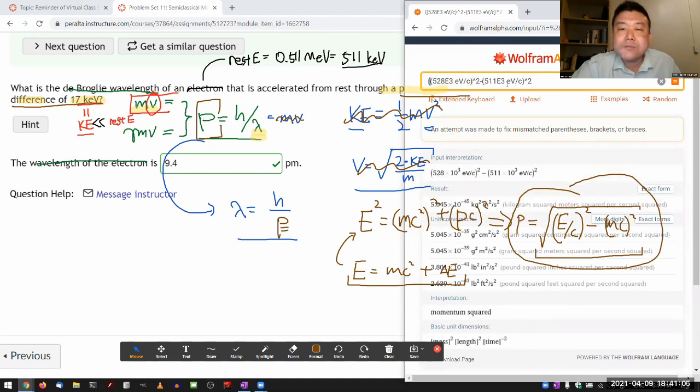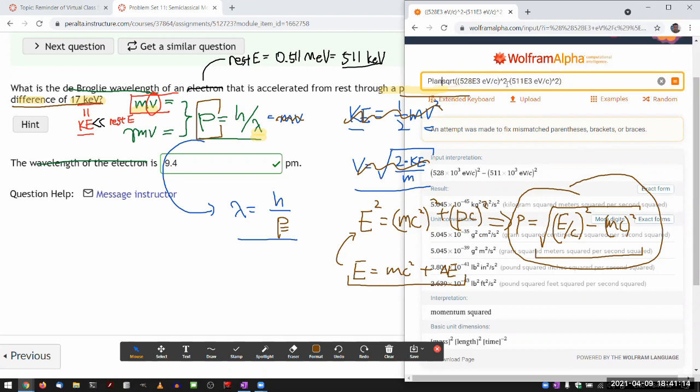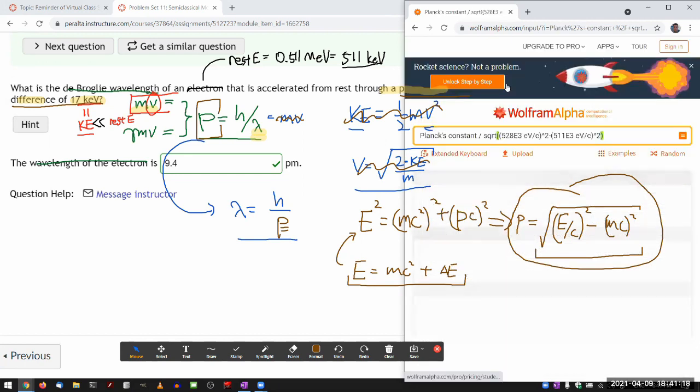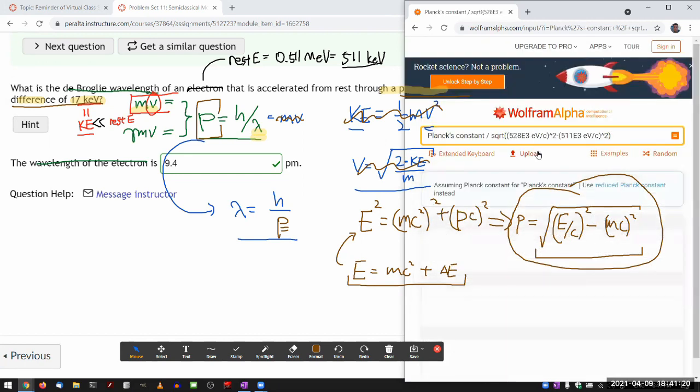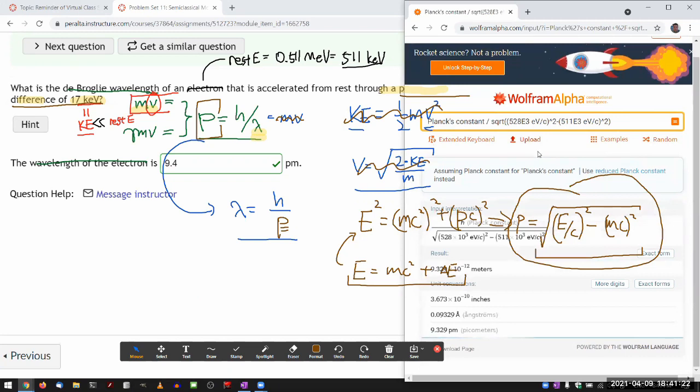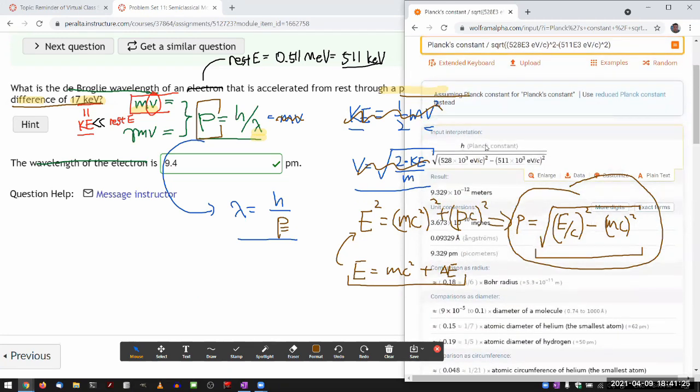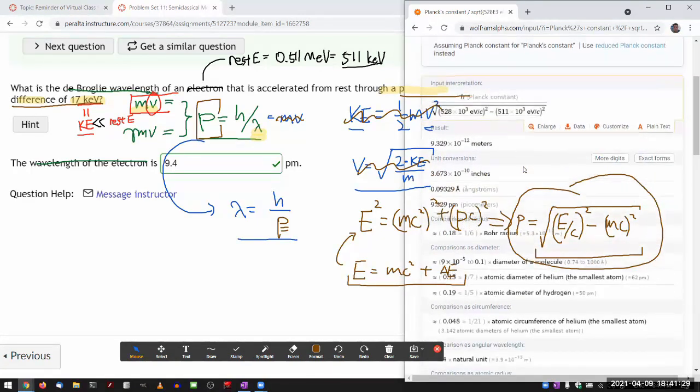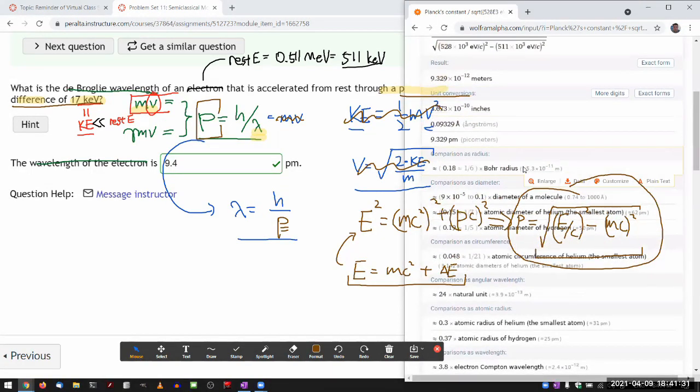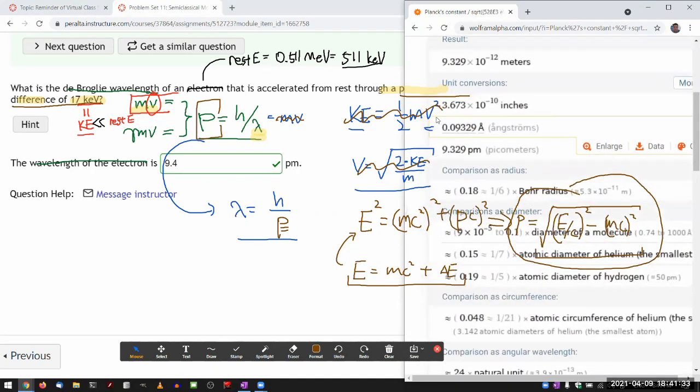Oh, is that why it was getting confused? Okay, I think, so square root it, so that should be momentum, and I'm going to do Planck's constant divided by that momentum. Oh, maybe that's what was confusing Wolfram Alpha before. Yeah okay, Planck constant divided by this momentum thing, okay, and when you do this relativistically correct expression it's 9.33 picometers.